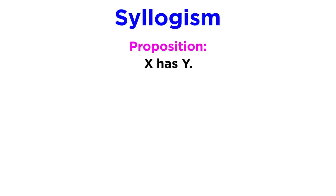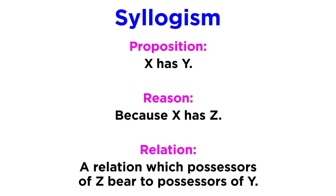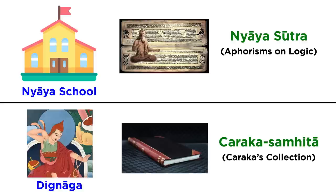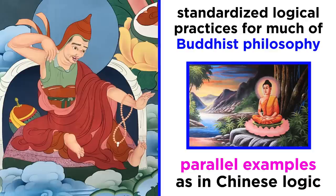One such format: Proposition: X has Y. Reason: Because X has Z. Relation: A relation which possessors of Z bear to possessors of Y. This developed especially with the Nyaya Sutra, or Aphorisms on Logic, of the Nyaya school, and its illustrated successor, the Charaka Samhita, or Charaka's Collection, culminating around the 5th century CE with the Buddhist thinker Dignaga and his successors. Dignaga standardized logical practices for much of subsequent Buddhist philosophical inquiry, ascribing great importance to parallel examples, as in Chinese logic.